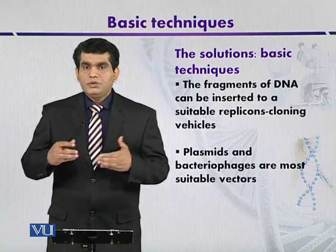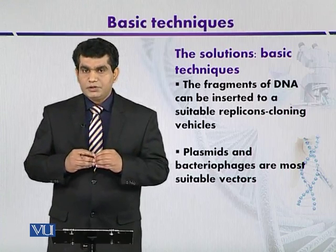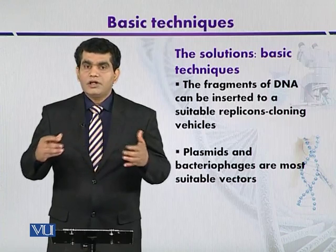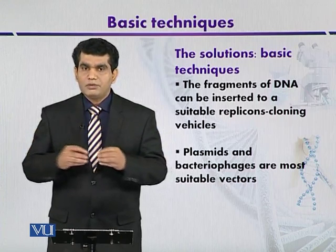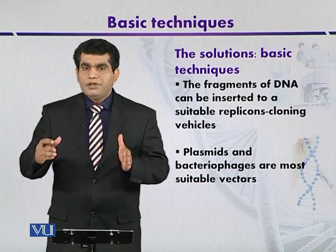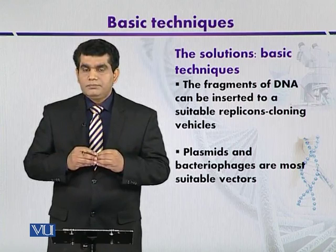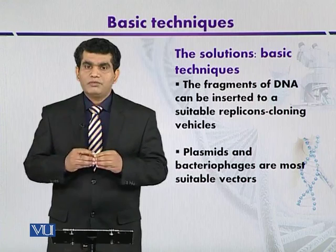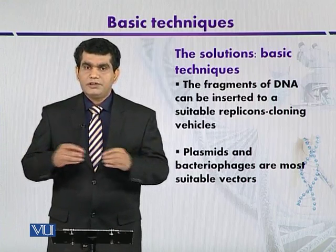Now the solution to this problem is there — scientists have worked on this issue. The foreign DNA, which we can call our gene of interest, can be inserted into a suitable replicon. These replicons are fragments of DNA that can be used as a cloning vector. Different types of cloning vectors are available, and among them, the most important ones are the bacterial plasmids and bacteriophages.